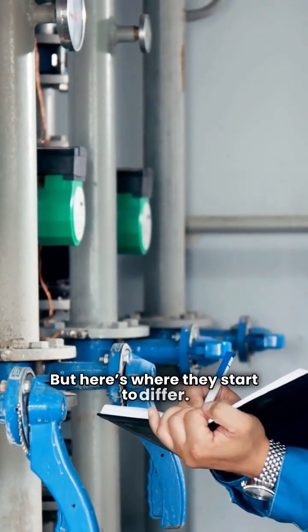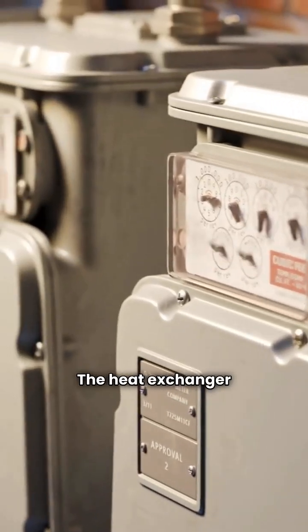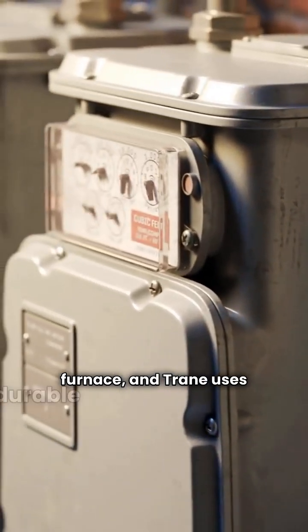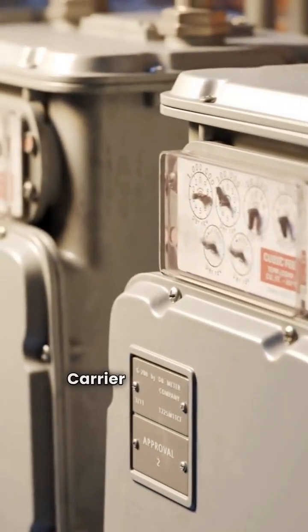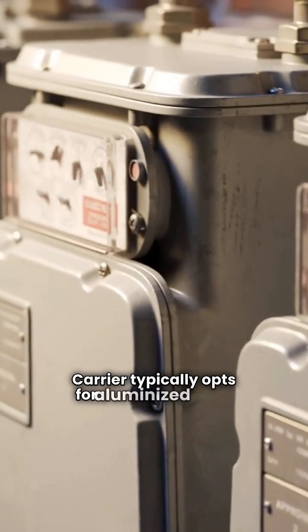But here's where they start to differ. The heat exchanger is the heart of the furnace, and Trane uses durable stainless steel while Carrier typically opts for aluminized steel.